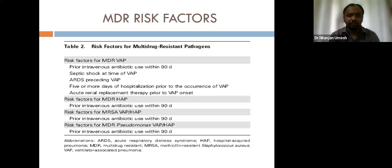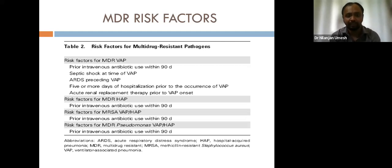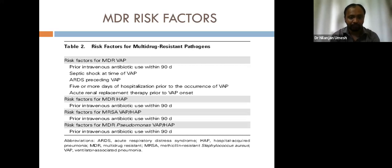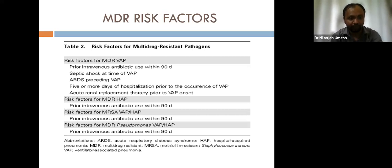Risk factors for multi-drug resistant pathogens in VAP include prior IV antibiotic use within 90 days, septic shock at the time of VAP, ARDS preceding VAP, five or more days of hospitalization prior to VAP onset, and acute renal replacement therapy prior to VAP. Prior antibiotic use within 90 days is a consistently important risk factor across MDR HAP, MRSA VAP, and MDR Pseudomonas.